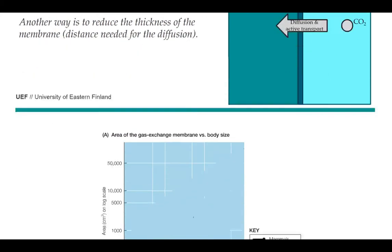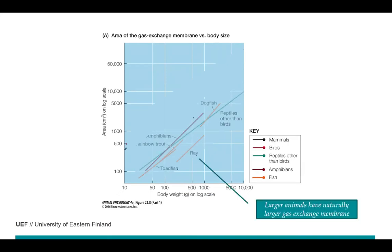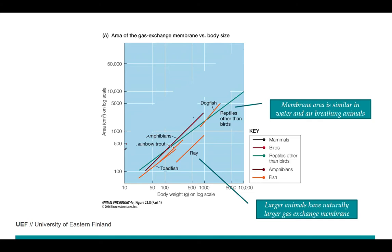Focusing on ectothermic animals: larger animals naturally have a larger gas exchange membrane — larger lungs or larger gills — because their metabolic rate is higher. But it doesn't matter whether you have gills or lungs. In fish, amphibians, or reptiles, the gas exchange area relative to body weight is quite similar, so oxygen from the environment can be transported to the circulation equally well across all these animals.